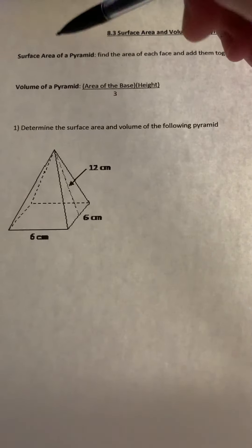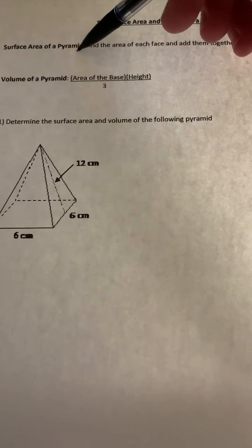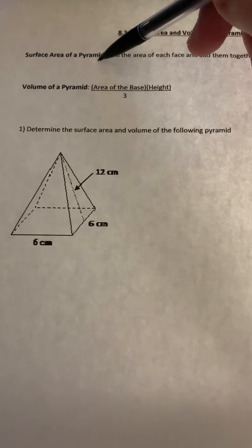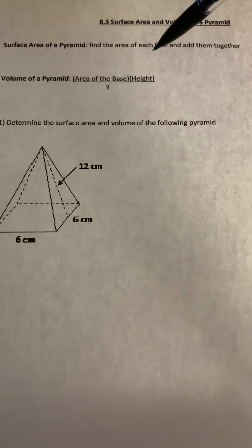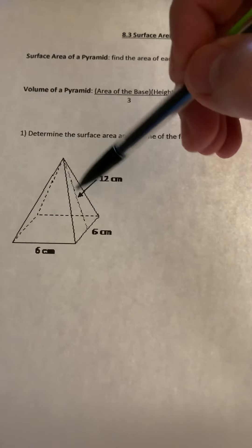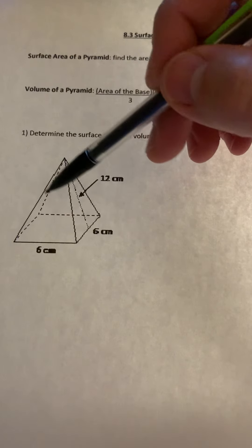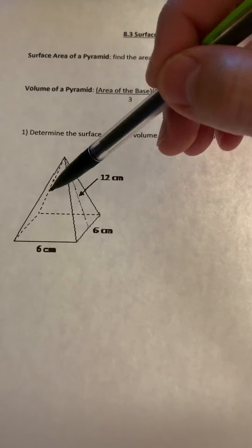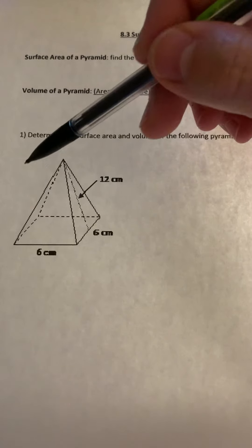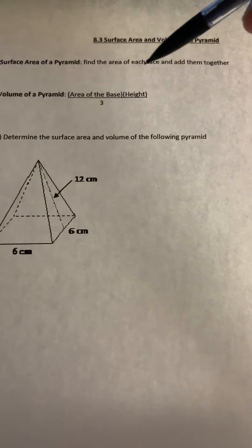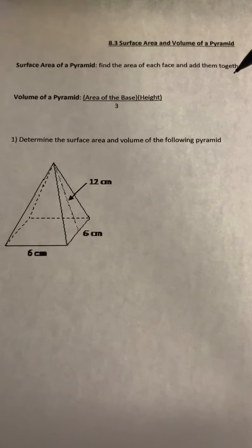Okay so the surface area of any type of pyramid or prism, we won't be doing prisms right now, but in pyramids what you're doing is you're finding the area of every face. So here this would be a face, this would be a face, and the back is the face, and the side and the bottom. So we just find the area of each one and then add them together.